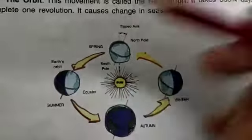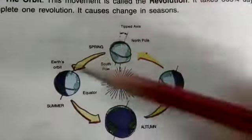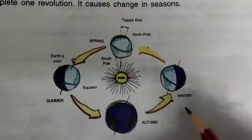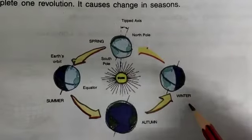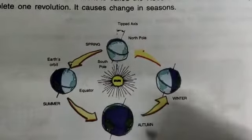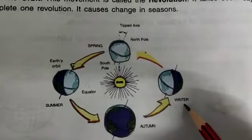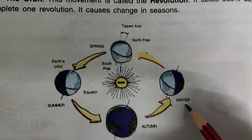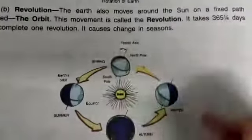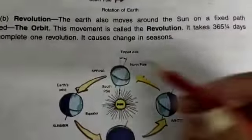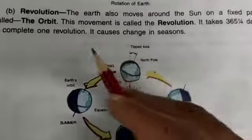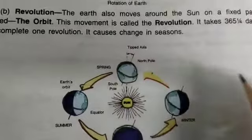The cycle of seasons — spring, summer, autumn, and winter — repeats continuously. This entire process is called revolution, and it is what causes the change in seasons.